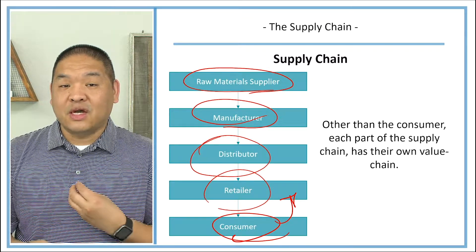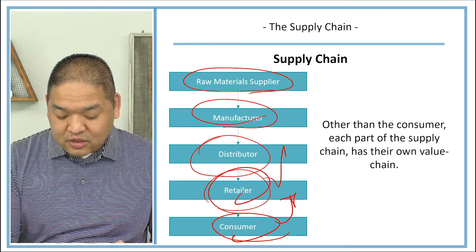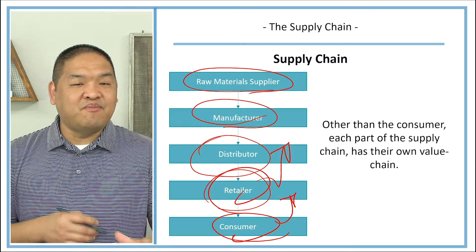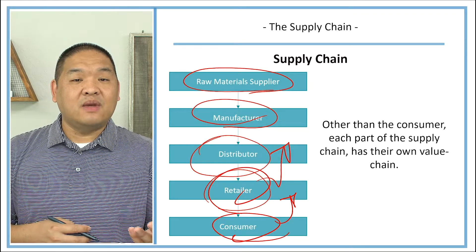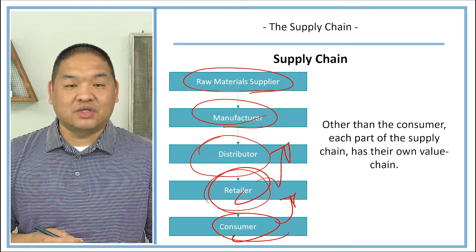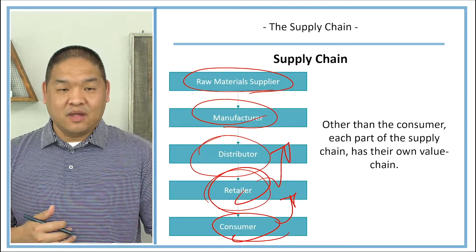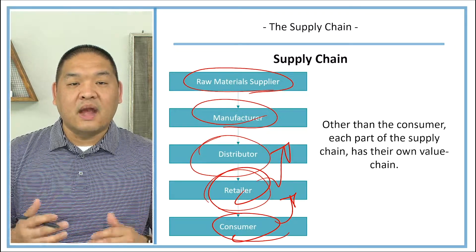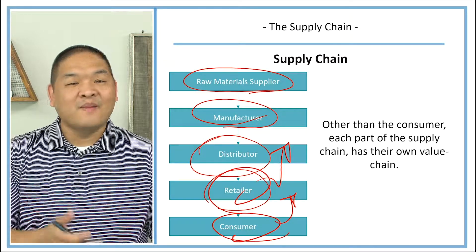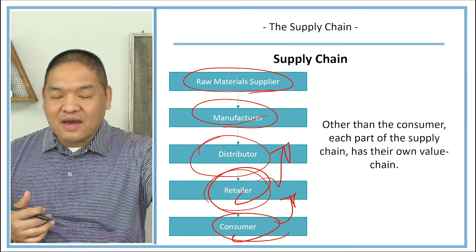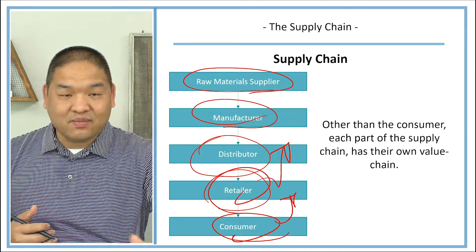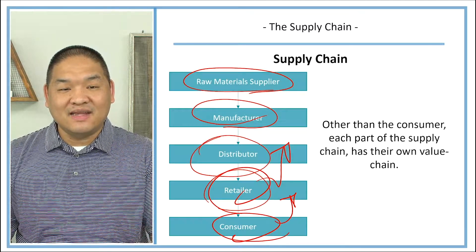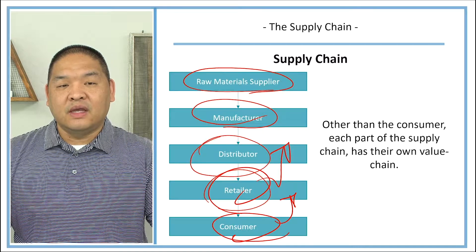In addition, we can hook up our AIS system to our distributors and show them in real time how much of their product remains on our shelves. Based on an agreement, they may be authorized to send more product at predetermined intervals — we don't even have to send a PO. They automatically send product to our stores so we can restock in almost real time, rather than waiting weeks for a PO to be processed.